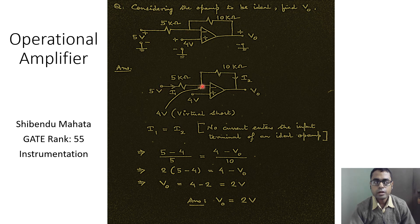So this current i1 has to flow through the feedback path of 10 kilo-ohms. Therefore, if this current is called i2, then the relation between i1 and i2 is that of equality, so i1 equals i2.